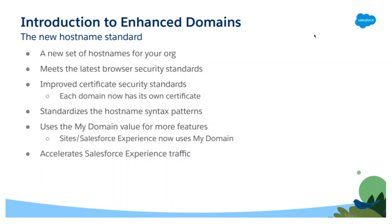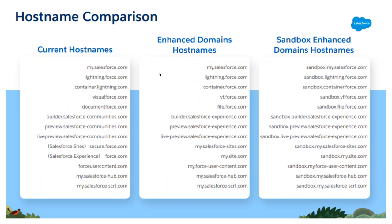Enhanced domains are required for features such as Salesforce Sites and Experience Cloud, including accelerated Experience Cloud traffic. The current hostname format is my.salesforce.com. With My Domain on a sandbox, you add the sandbox name — for example, sandbox.lightning.force.com. For document storage, the enhanced domain hostname changes from documentforce.com to file.force.com, and for sandboxes it becomes sandbox.file.force.com.